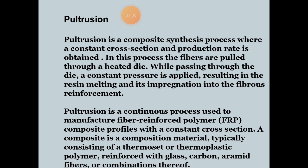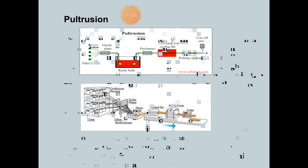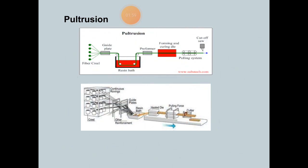Composite profiles with a constant cross-section. A composite is a composition material typically consisting of thermoset or thermoplastic polymers, reinforced with glass, carbon, or aramid fibers and combinations thereof.